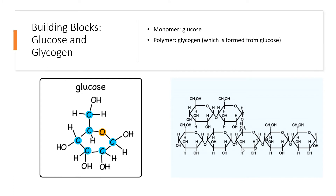For carbohydrates, the monomer is glucose — a six-carbon organic molecule — and many of these glucose molecules come together to create glycogen, which is a complex polysaccharide.